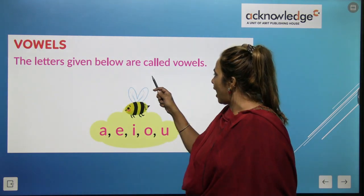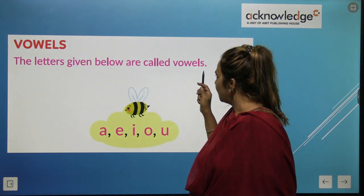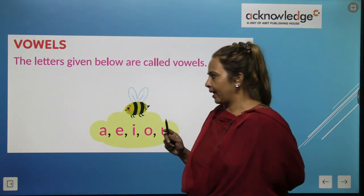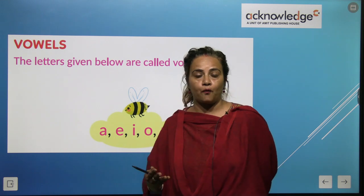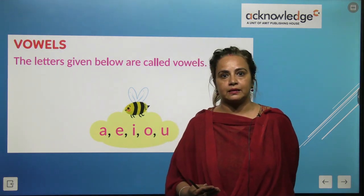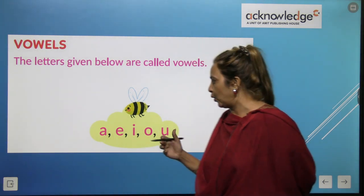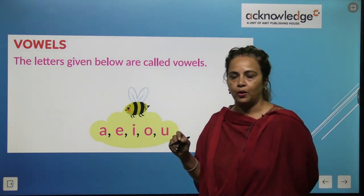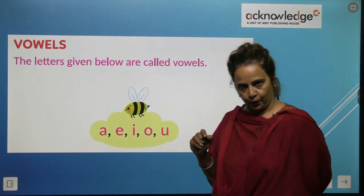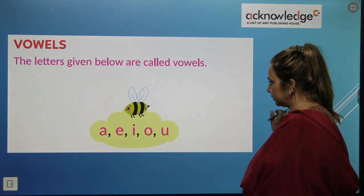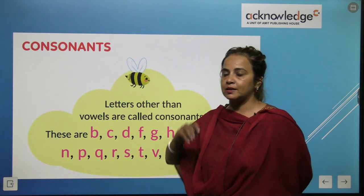So, it is vowels. The letters given below are called vowels. So what are vowels and what are consonants? A, E, I, O, U. A, E, I, O, U are the vowels.